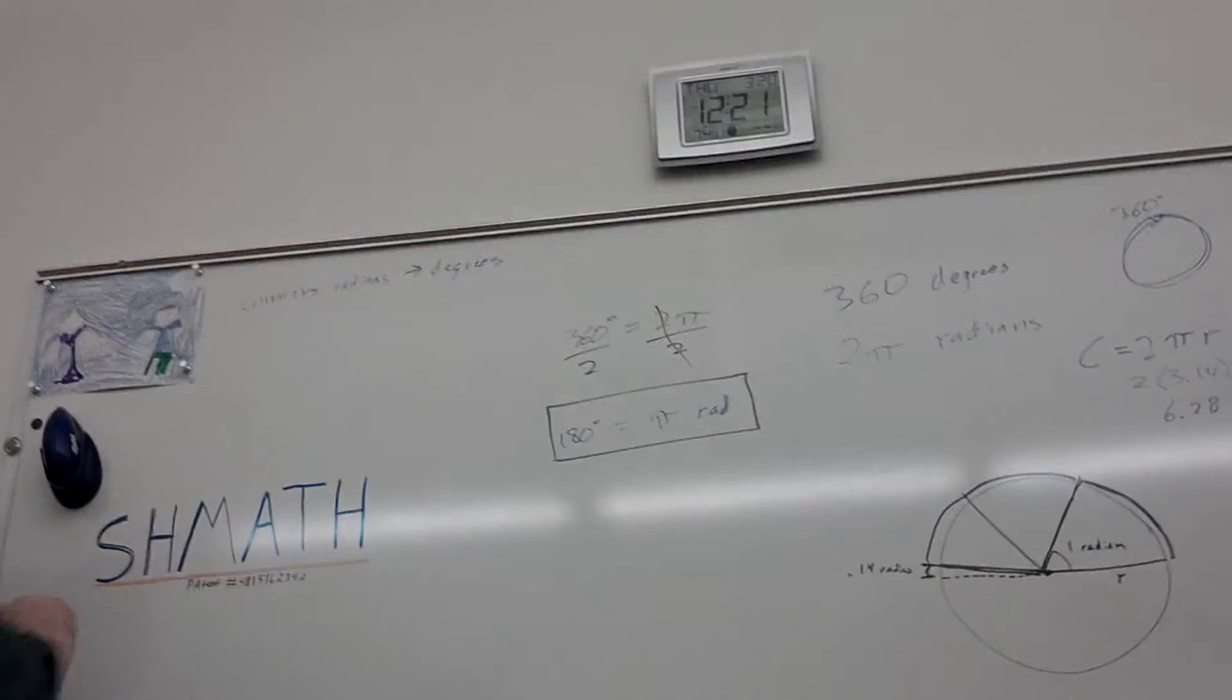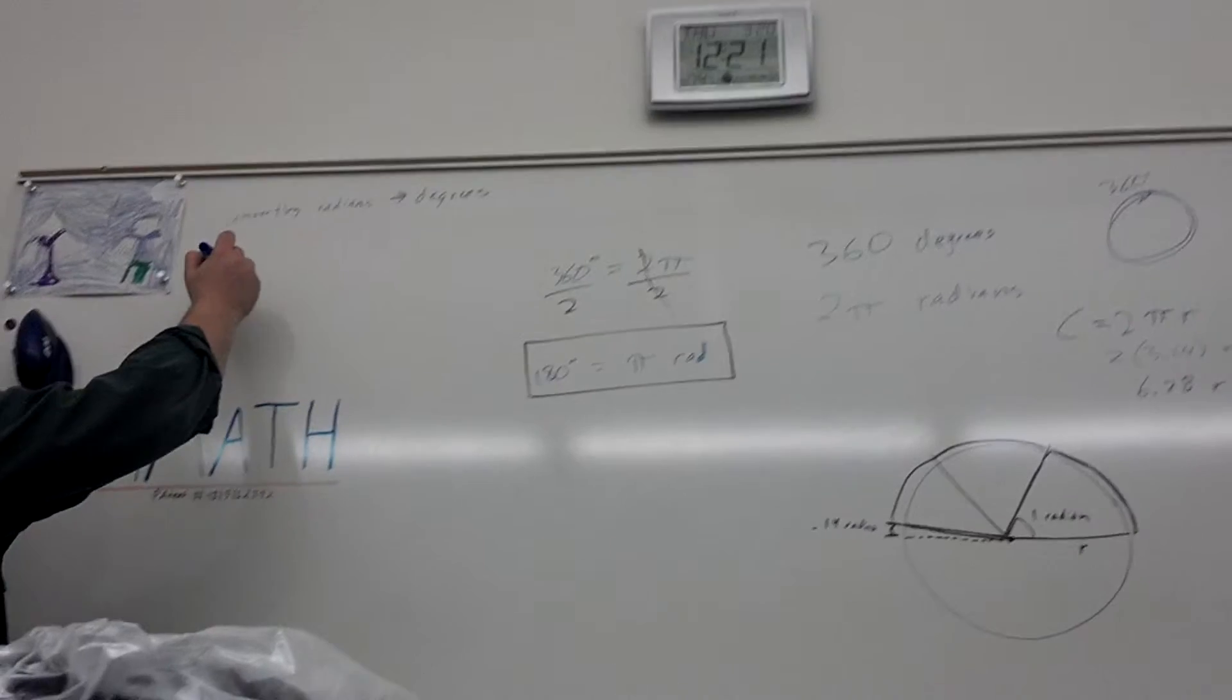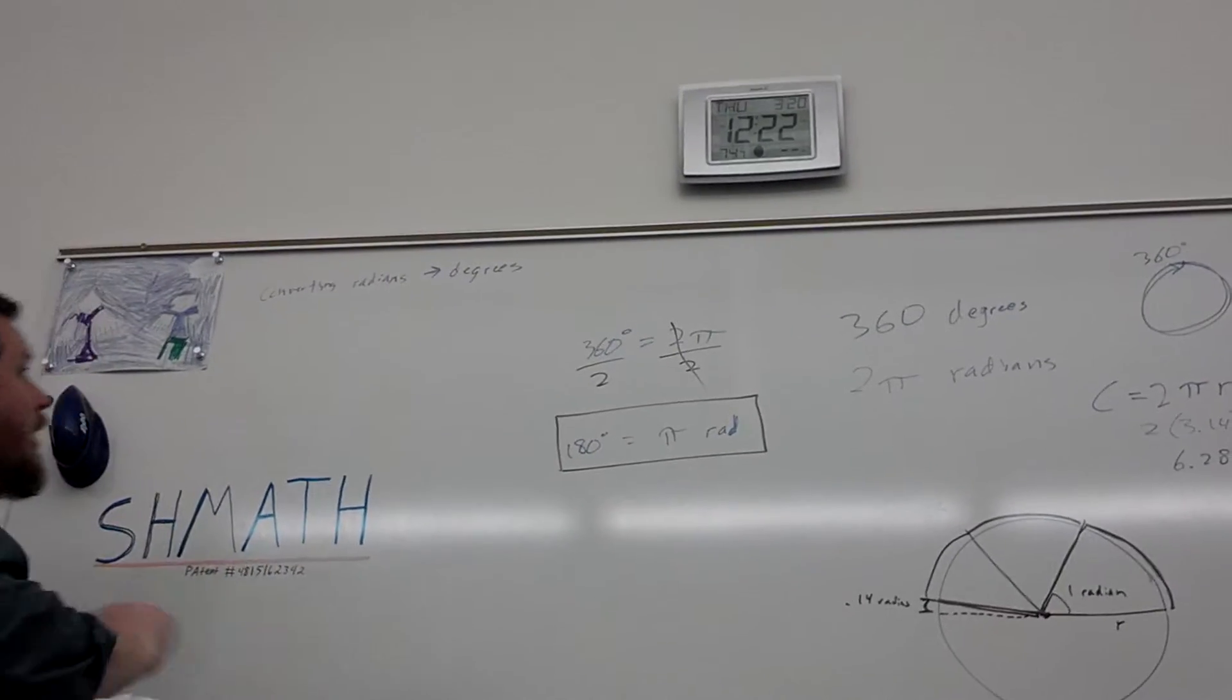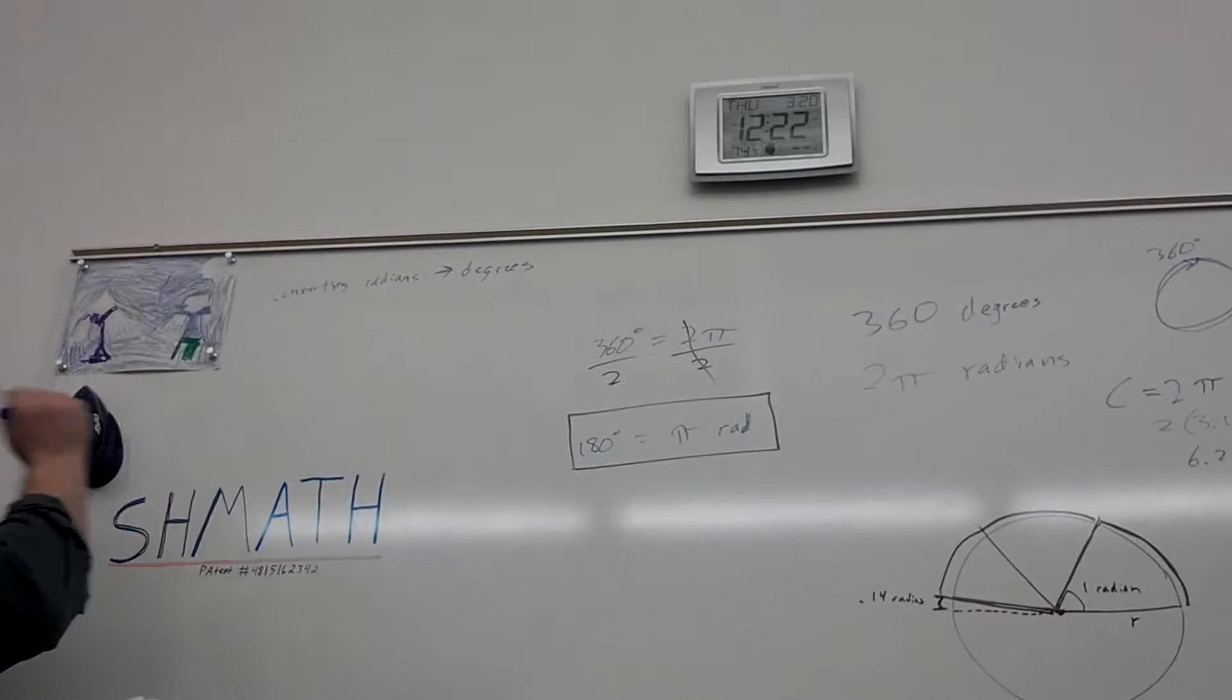When you're converting radians to degrees, let's say, for example, do you just say no? Then you just give up and you drop the class and that's it. Or, if you actually want to do it.